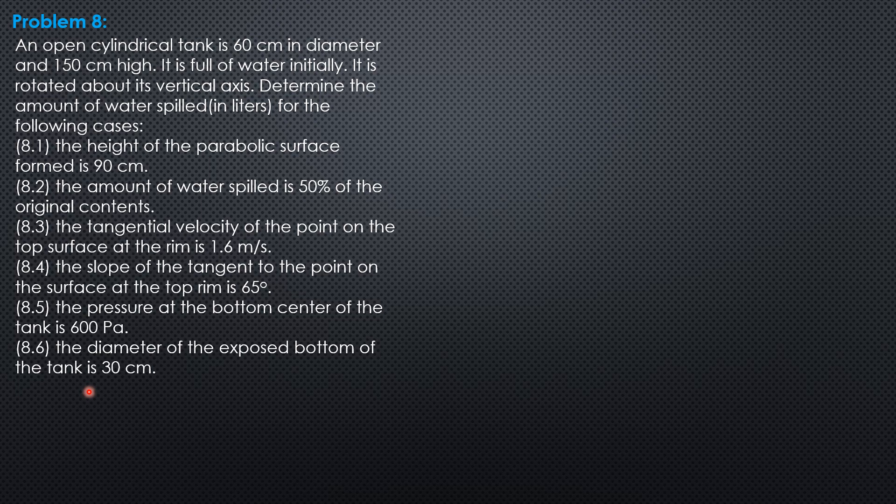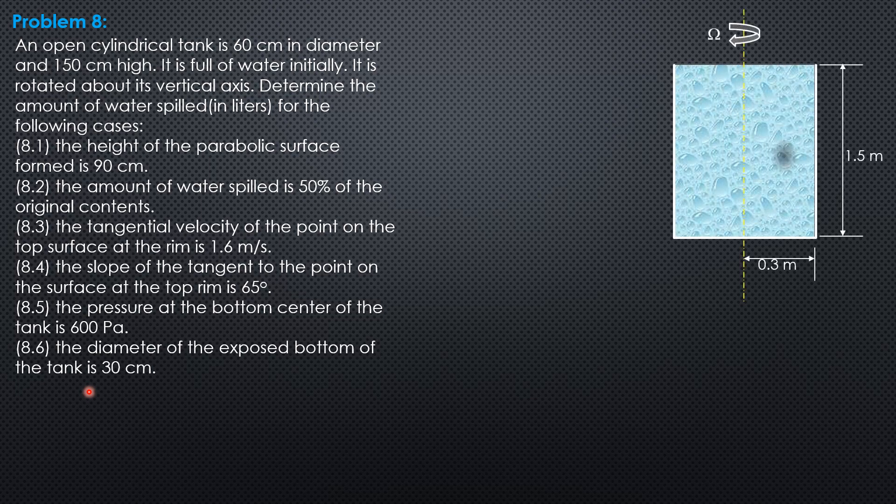So for the first problem, we apply directly the formula volume of paraboloid of revolution, because if a paraboloid is formed here with height, then automatically the volume inside the paraboloid will be the amount that is spilled because the open top cylindrical tank is full. So volume spilled is pi over 2 times radius 0.3 squared times 0.9 then times 1,000. So pi over 2 radius squared height, that's the volume of paraboloid with one base. So it is equal to 127.2 liters.